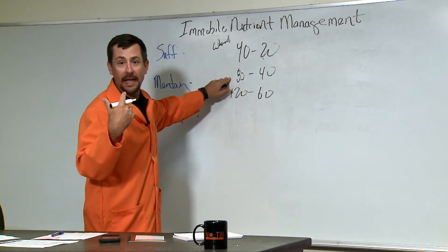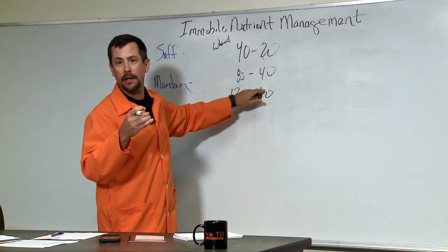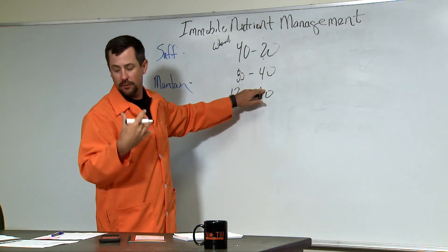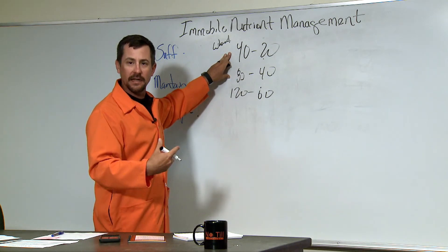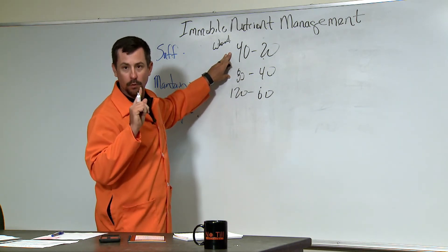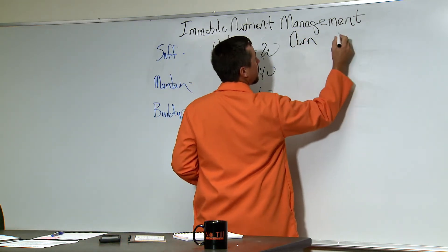However, if you're able to grow an 80 bushel crop, you're going to remove slightly more than you apply and potentially over time that soil test goes down. We don't typically see decreasing soil test, however, in a wheat system. Where we get decreasing soil test is when we start bringing in corn and soybean.